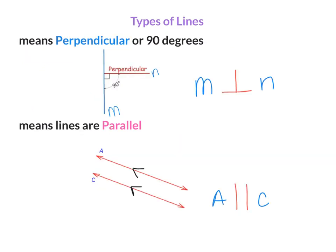In geometry, there are some symbols you need to be aware of. When you see a 90-degree angle with a box, that means perpendicular. The symbol for perpendicular is an upside-down T. When you see lines that are parallel, they'll often be noted with double arrows, and the symbol for parallel lines is double bars.